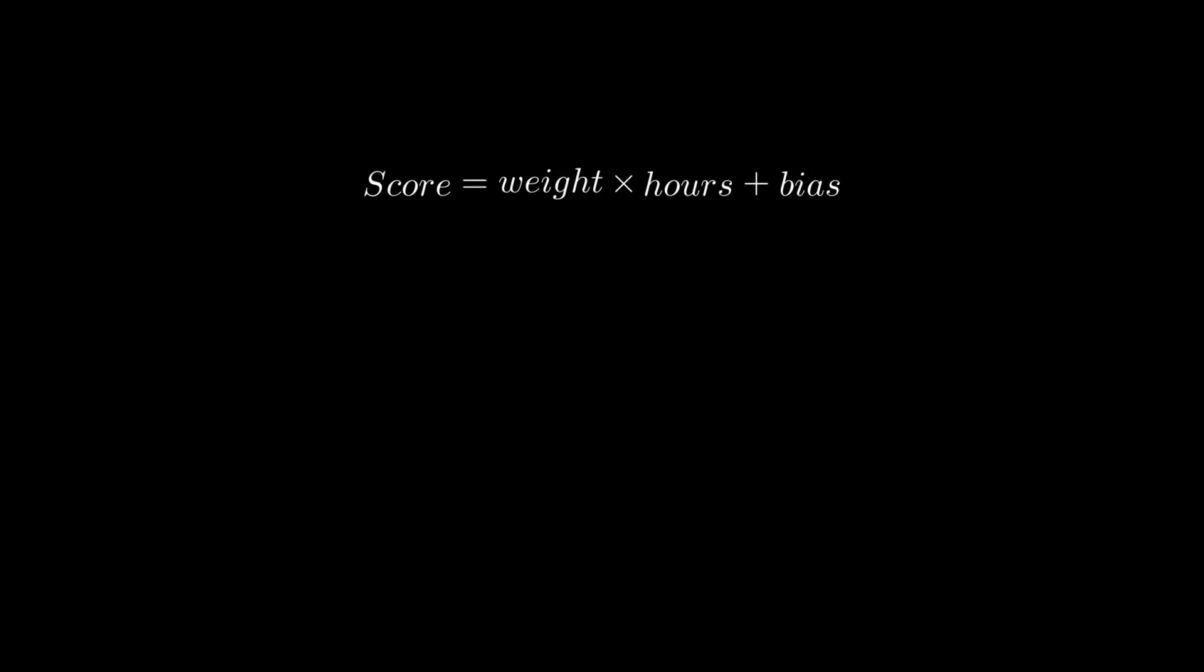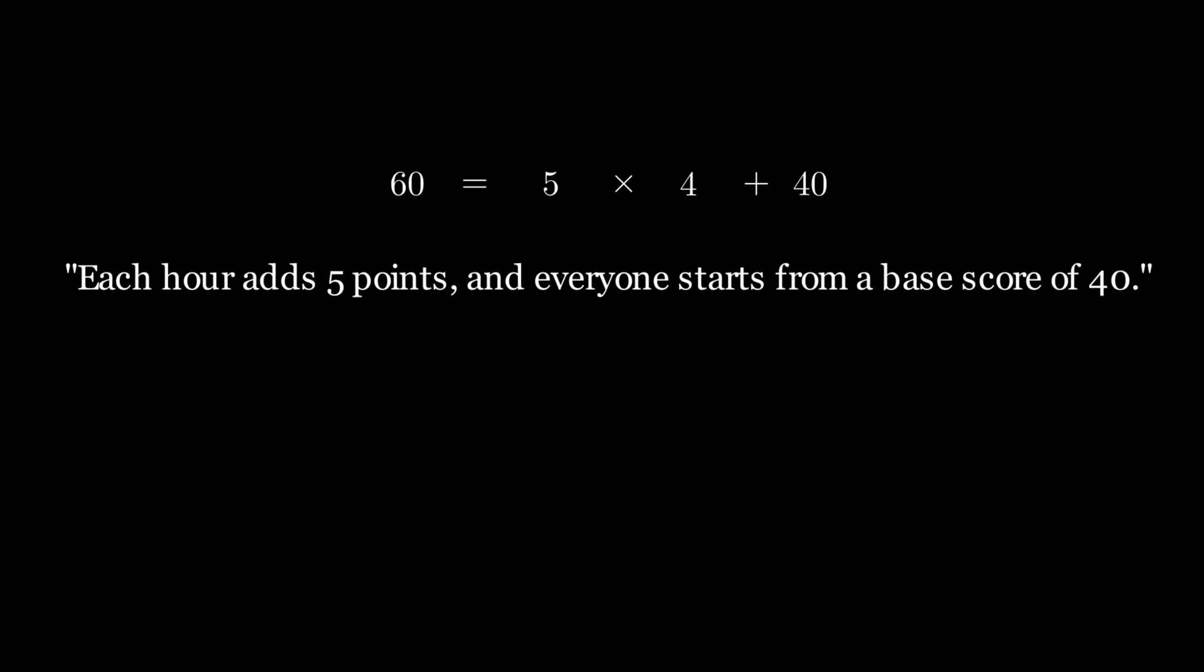If the weight is 5 and the bias is 40, then studying 4 hours gives score equals 5 times 4 plus 40 equals 60. The model is saying each hour adds 5 points and everyone starts from a base score of 40.